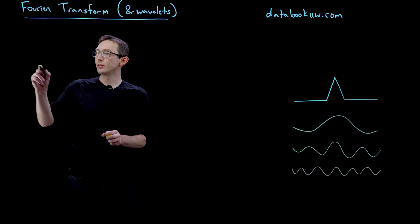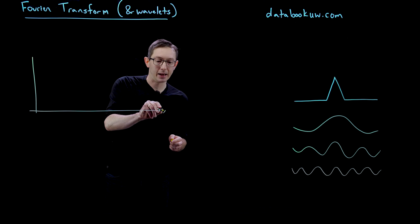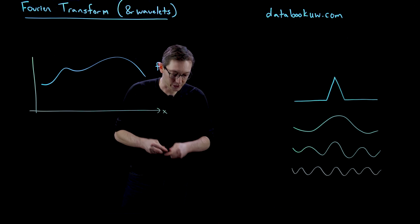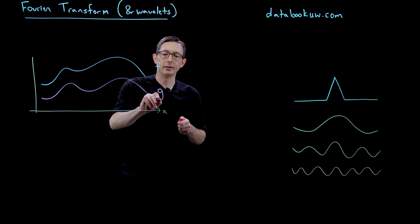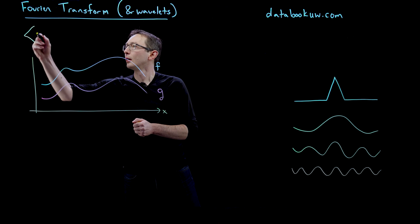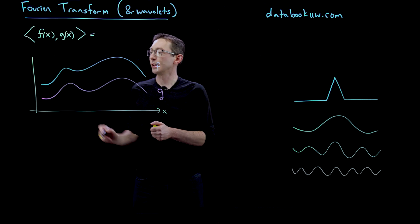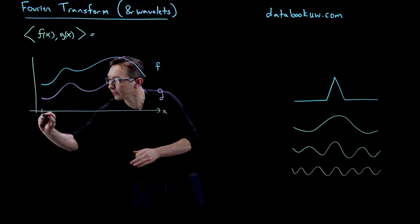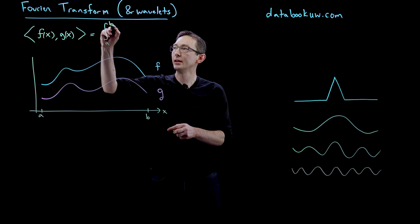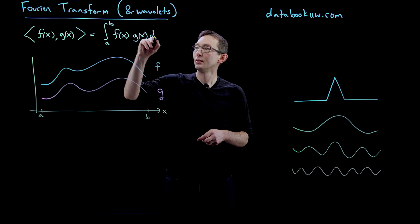I'm going to do this with an example where we're going to take some functions of x. We're going to have some function f and some function g, and we're going to define the inner product between these two functions. I'm going to define the inner product of f(x) with g(x) as the integral, defined on some domain from a to b: the integral from a to b of f(x) times g(x) dx.